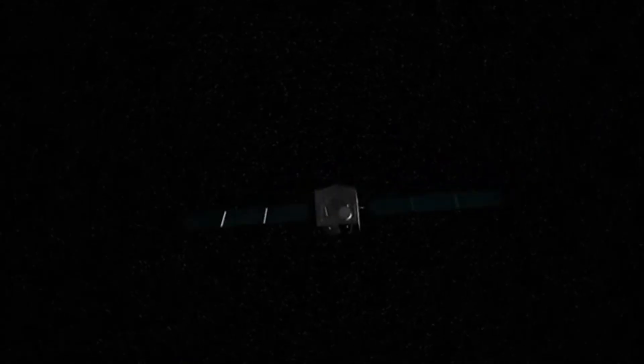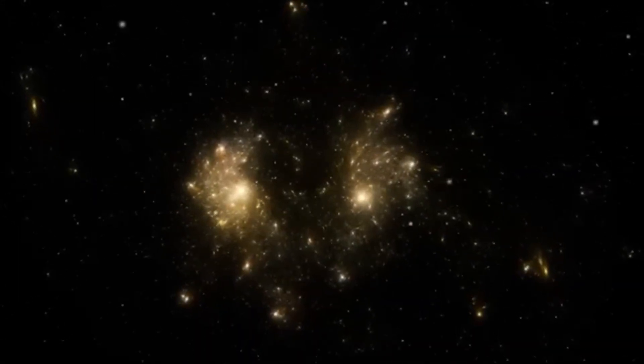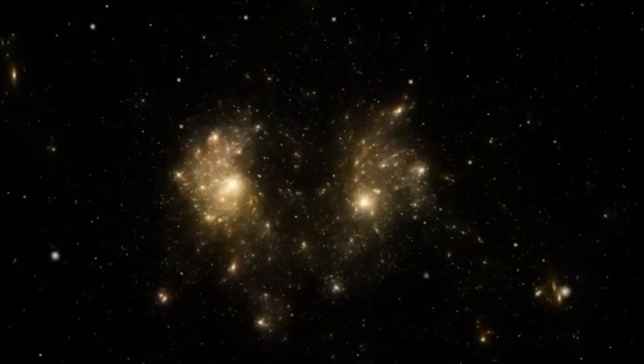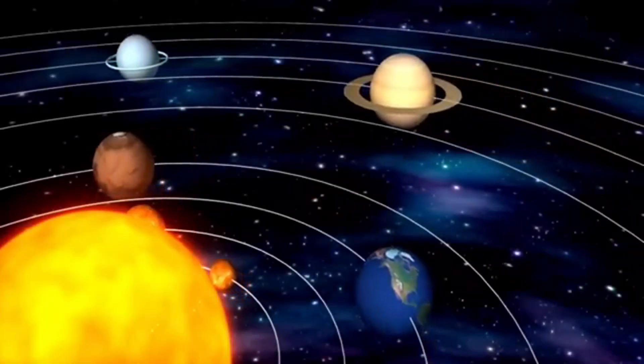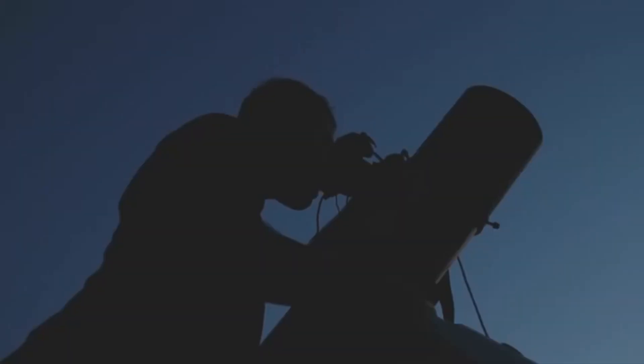Another puzzle Webb's tackling is the universe's eerie uniformity. Look at the night sky, and the temperature of space is almost identical everywhere, even across billions of light years. It's like finding the same warm breeze on opposite sides of the planet. How could regions so far apart be so similar? The answer lies in inflation. That split-second growth spurt smoothed out the universe, stretching tiny differences into a vast, even canvas. Without inflation, the cosmos would be a lumpy mess, not the elegant web of galaxies we see today. Webb's images of ancient galaxies confirm this, showing a universe that was already surprisingly orderly in its youth.